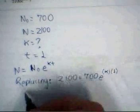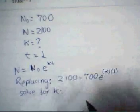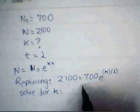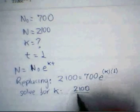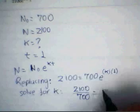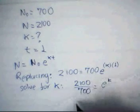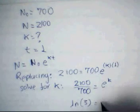K is an unknown, so solve for k. We are going to divide both sides by 700, so we end up with 2100 divided by 700 equals e to the k. We take the logarithm and simplify this, so we get the natural log of 3 equals k.